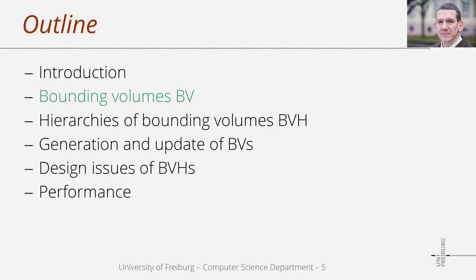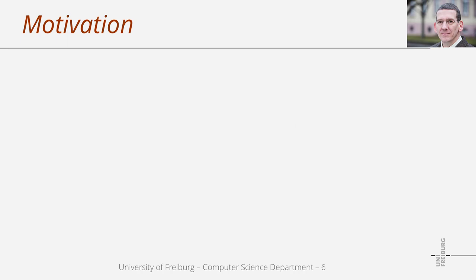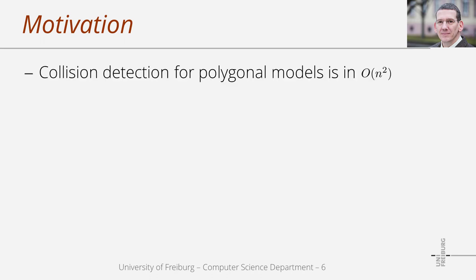Now I'm going to introduce bounding volumes, abbreviated BV. First, I'd like to motivate how and why to use bounding volumes in the detection of collisions among polygonal models. When we have two polygonal models with an overall number of n primitives, a simplistic collision check would require a number of intersection tests that is quadratic in the number of primitives.